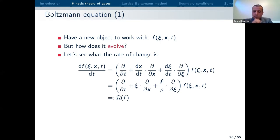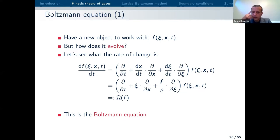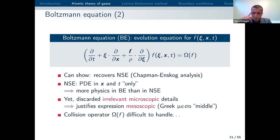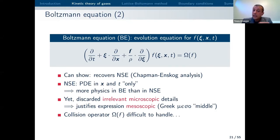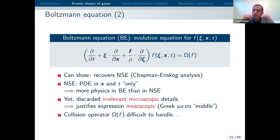This is the Boltzmann equation: you have the total time derivative of f and a collision operator — let's call this the Boltzmann transport equation. You can show via Chapman-Enskog analysis that this recovers, in some asymptotic limit, Navier-Stokes behavior. The viscosity emerges in the process as a property of the collision operator — some effective properties of the collision operator will be visible on the macro scale as viscosity.